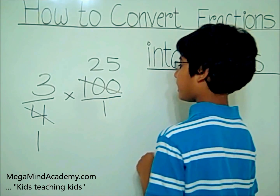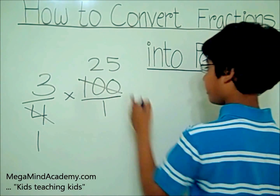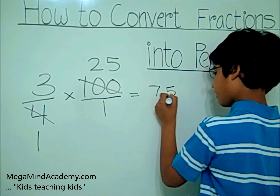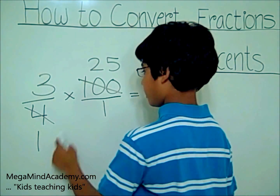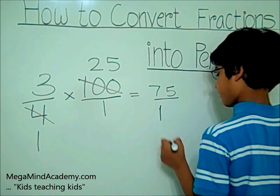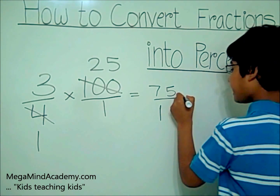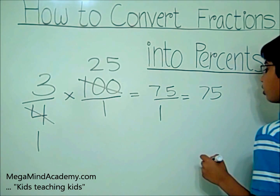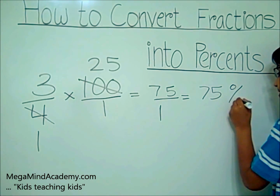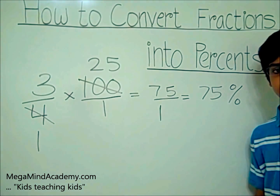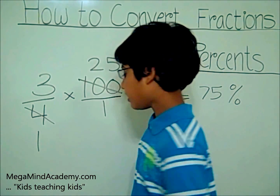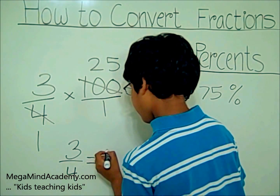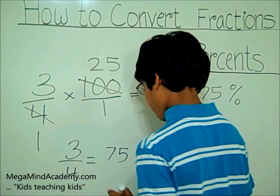Then three times twenty-five equals seventy-five, divided by one times one, which equals one. That equals seventy-five. So you have seventy-five percent. So that means three-fourths equals seventy-five percent.